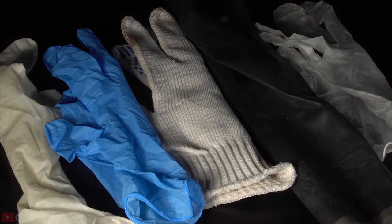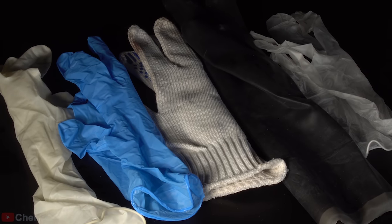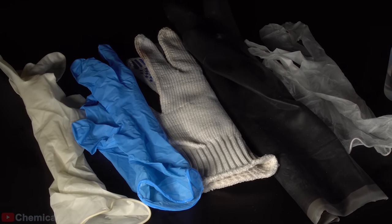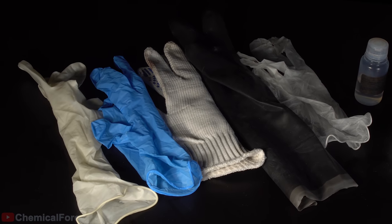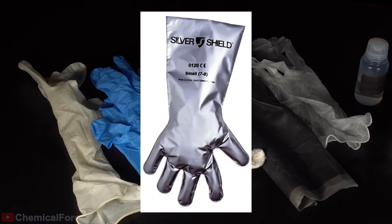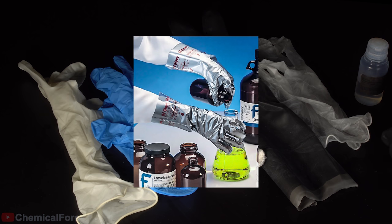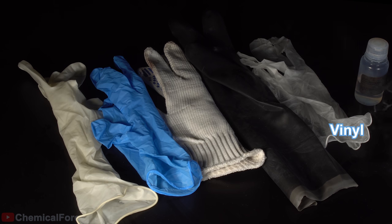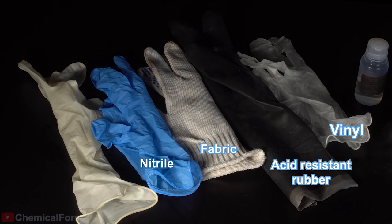So guys, now we need to figure out what material the gloves should be made of to use the strongest acid for the upcoming experiments. Actually, it would be nice to use silver shield gloves. Maybe one day I'll tell you about them, but now I prepared the most widespread types of gloves for the test, which are vinyl, acid-resistant rubber, fabric gloves, nitrile and latex. When superacid interacts with vinyl gloves, they blacken and bubble. Maybe it's not the type of gloves one should use to operate with it.